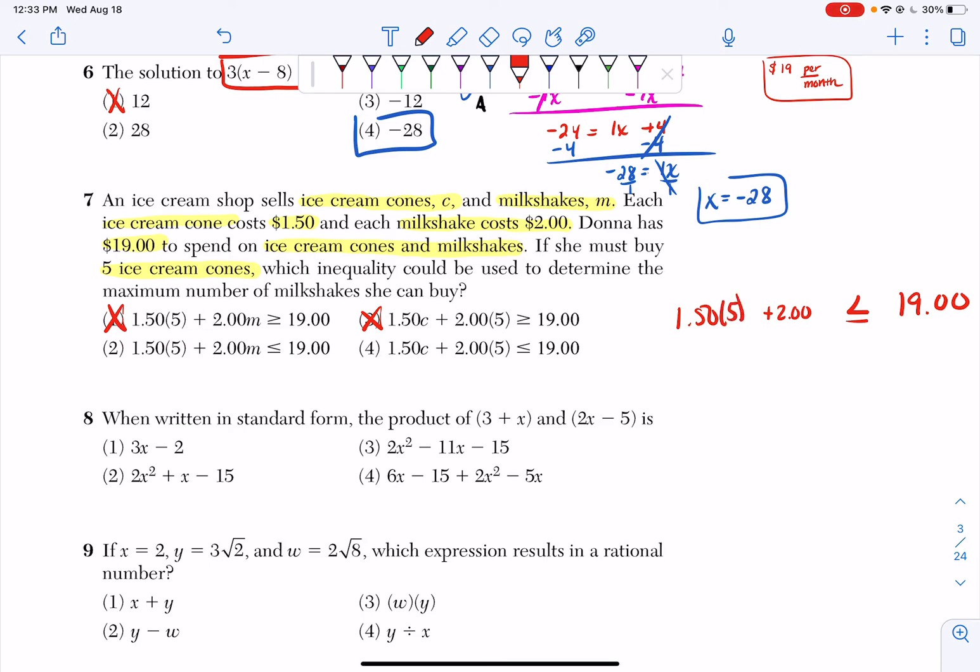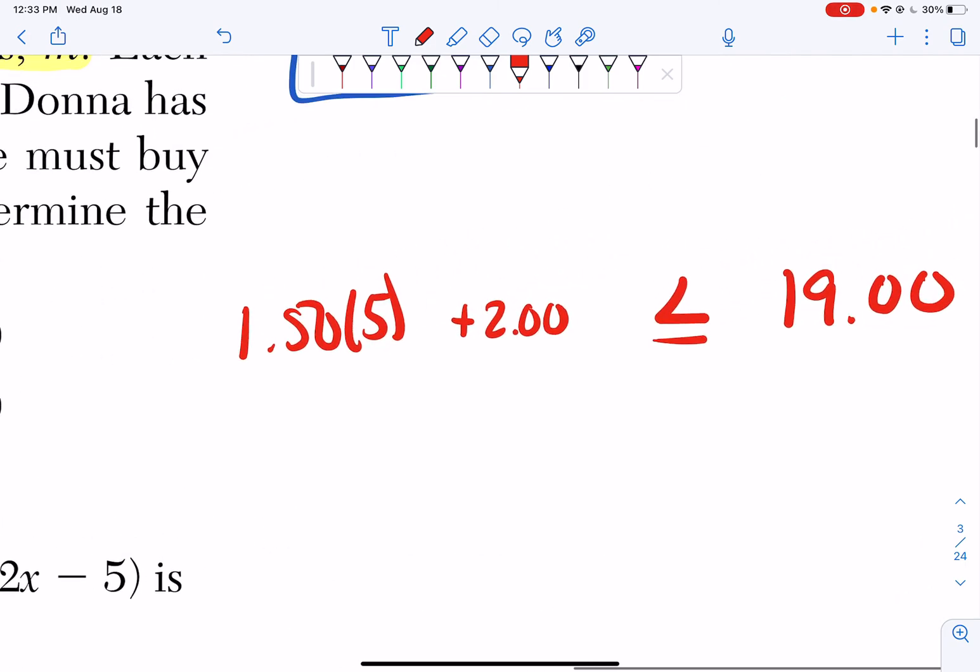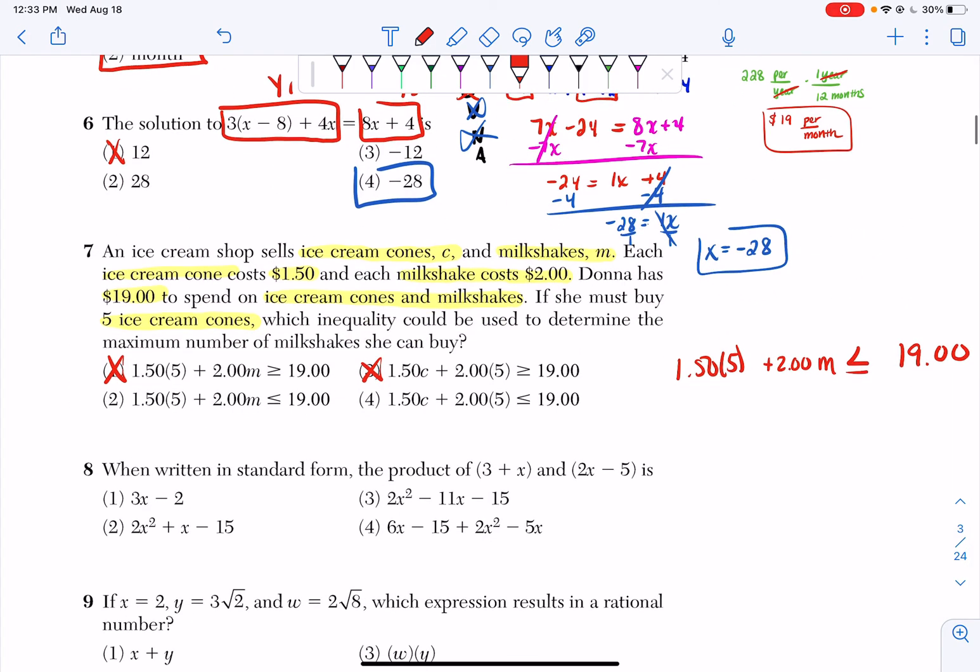And I'm going to add the variable m to milkshakes because I don't know how many milkshakes I'm buying. So if I look, my final answer is going to be 1.50 times 5 plus 2m less than or equal to 19. So choice two.